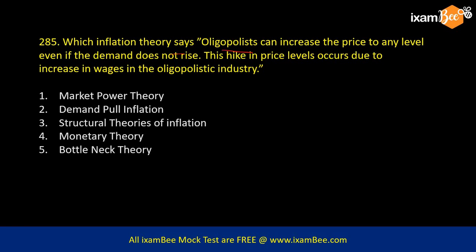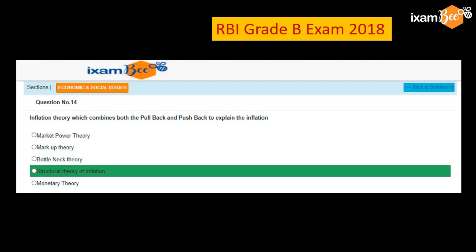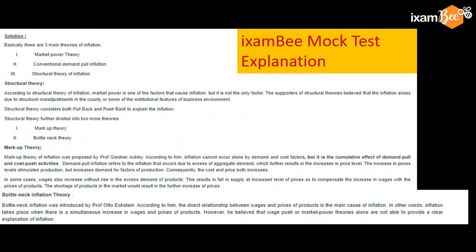Which inflation theory says oligopolists can increase the price at any level even if demand does not rise, because the price hike occurs due to an increase in wages in the oligopolistic industry? The answer is market power theory. A similar question asked in 2018 concerns structural theory of inflation. These theories of inflation are important because RBI manages inflation. Go to the previous year papers on the iExambi website — you can find explanations there, and more questions can be framed from those explanations.